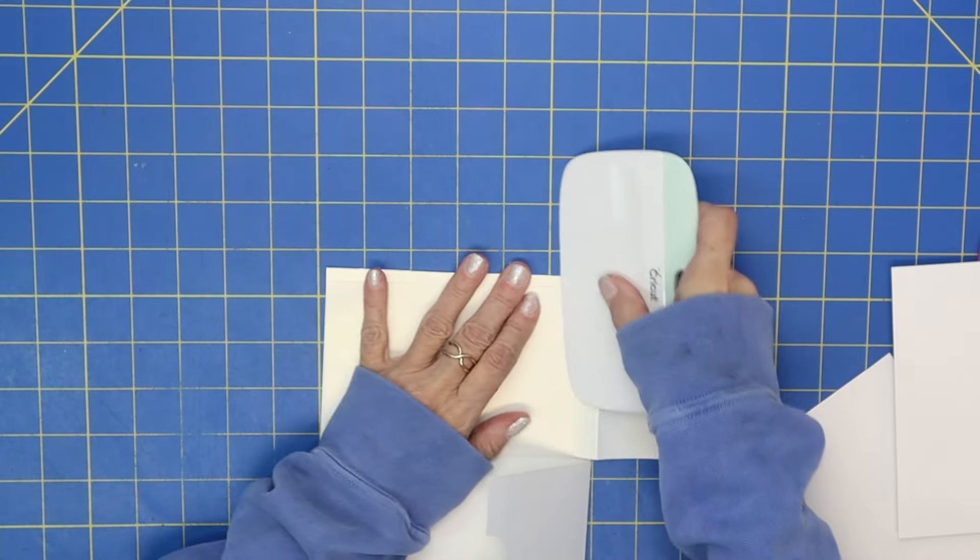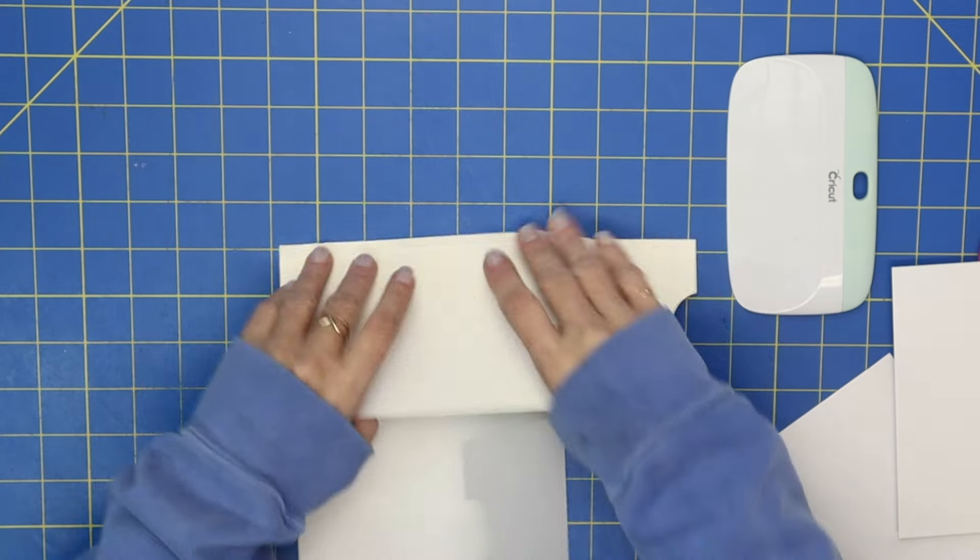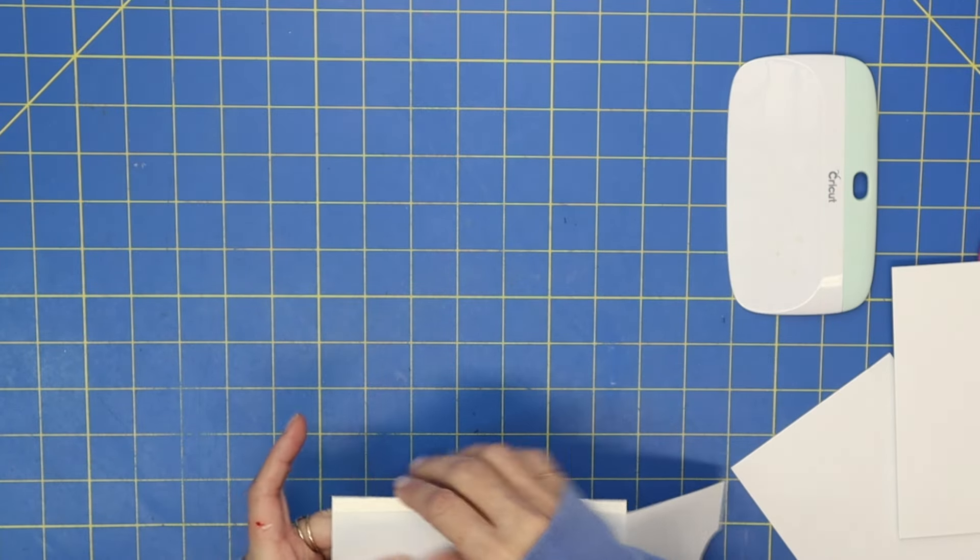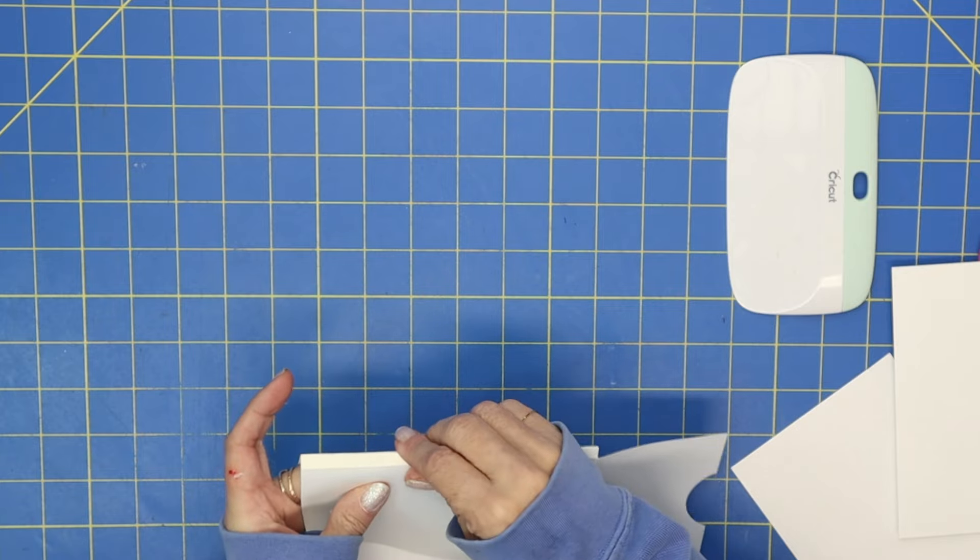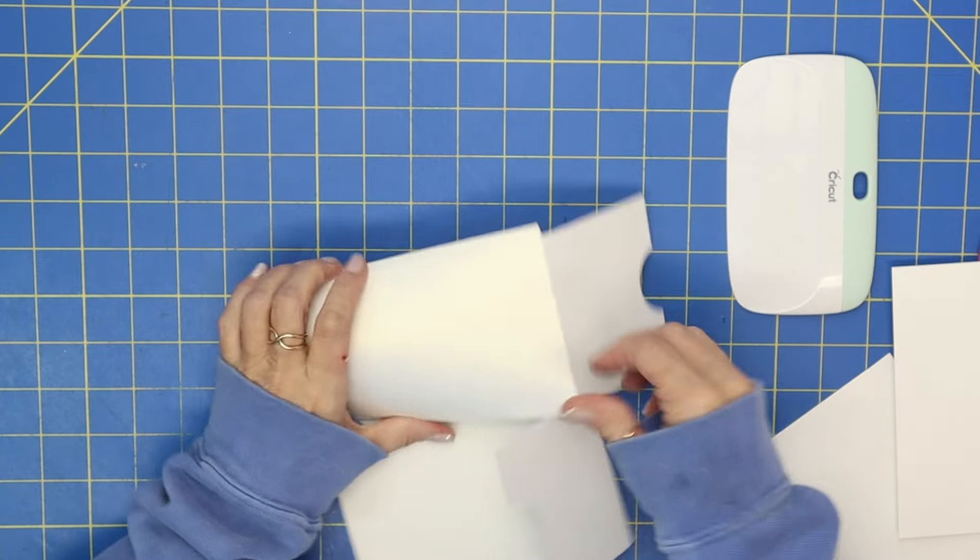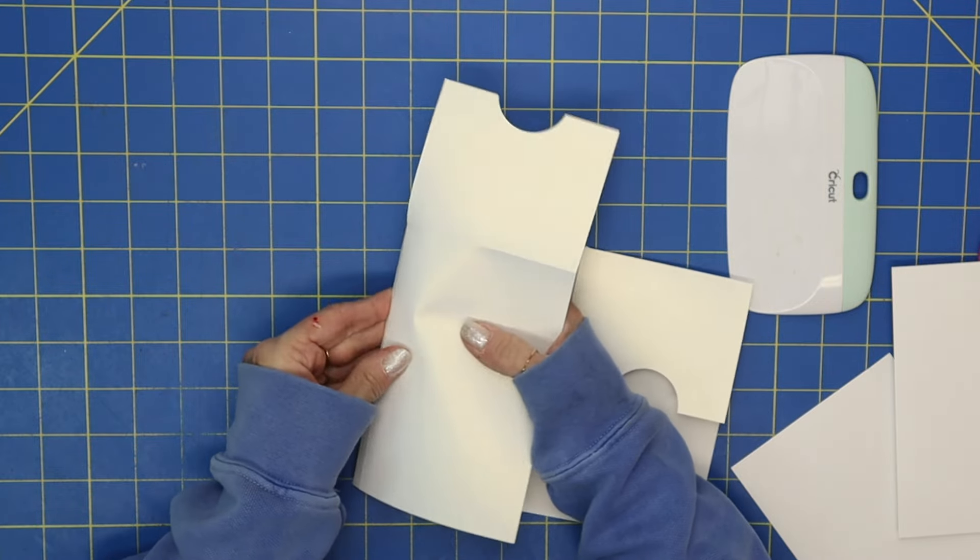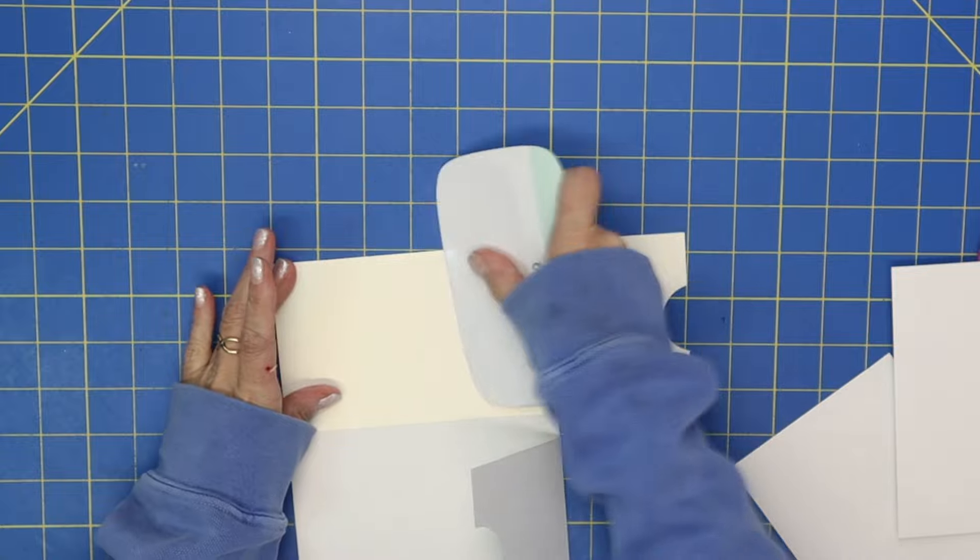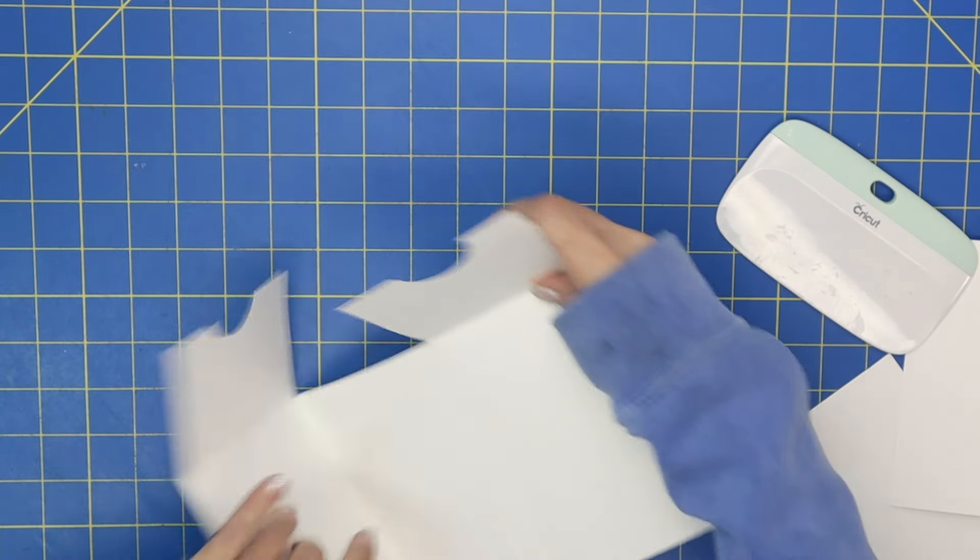And this is just a quarter-inch score right here. So sometimes when it's just really small it's a little bit harder to do, so just take your time. It's a quarter-inch score line there—that's going to make it so that you can put a little bit of bulk into your album. Okay, let's do the other side.